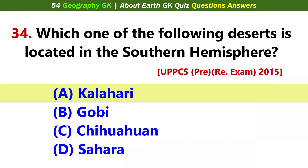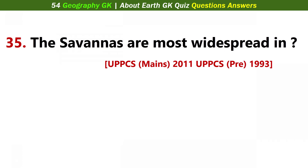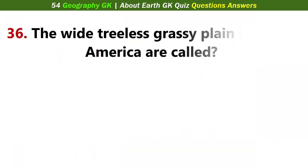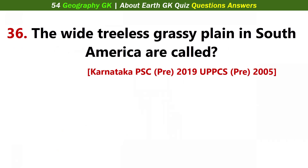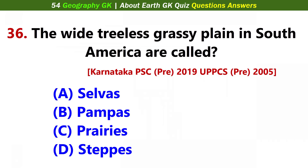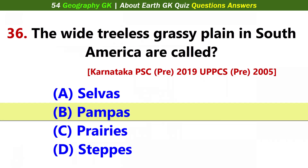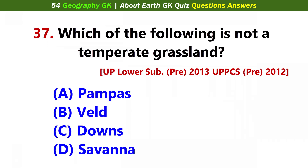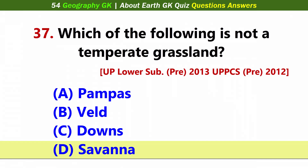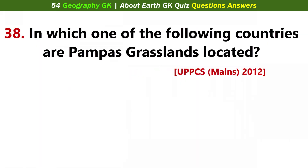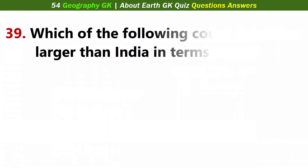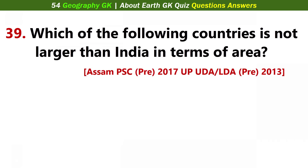The savannas are most widespread in? Answer A: Africa. The white tree-less grassy plains in South America are called? Answer B: Pampas. Which one of the following is not a temperate grassland? Answer D: Savannah. In which one of the following countries are Pampas grasslands located? Answer C: Argentina.